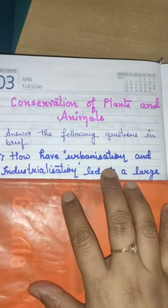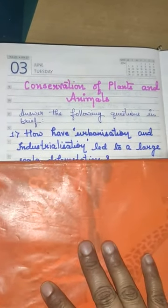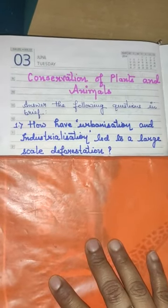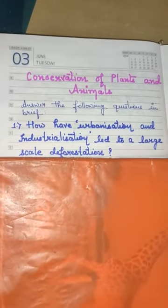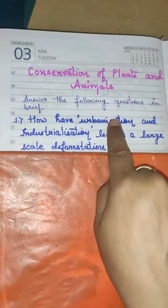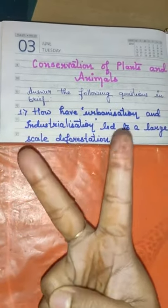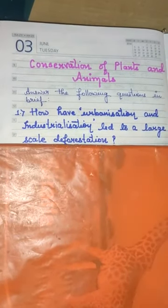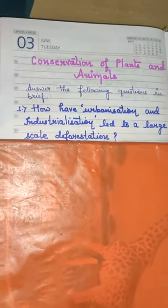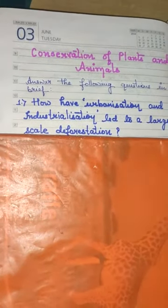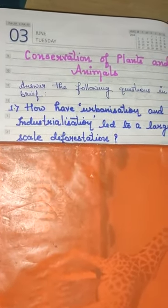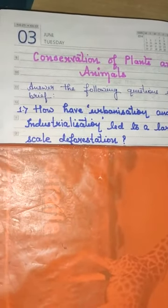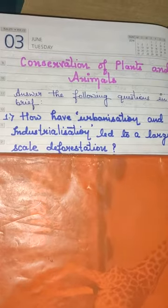The very first question in Part D, Answer the following questions in brief, is: how have urbanization and industrialization led to large scale deforestation? Urbanization and industrialization are two processes which lead to an increase in deforestation. First of all, deforestation means overcutting of trees in an unplanned manner.